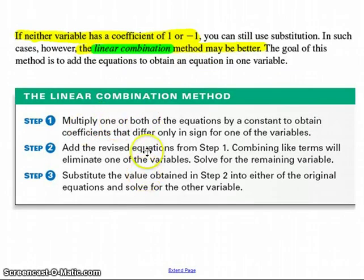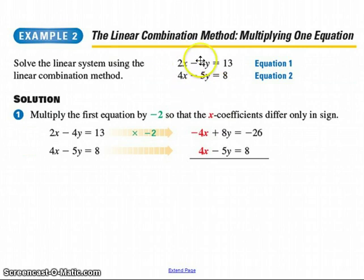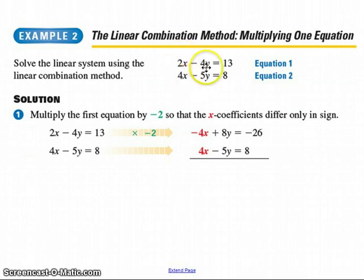I think this is going to make a whole lot more sense if I jump right to the example and you see it as we go along. Step one, as you're about to see, is that you're going to multiply one of the two equations by a constant. Why would you do that? Well, look at the equations that you have here. None of the coefficients on x nor on y is 1 or negative 1.